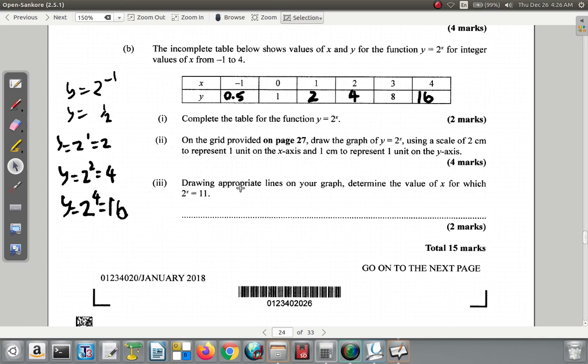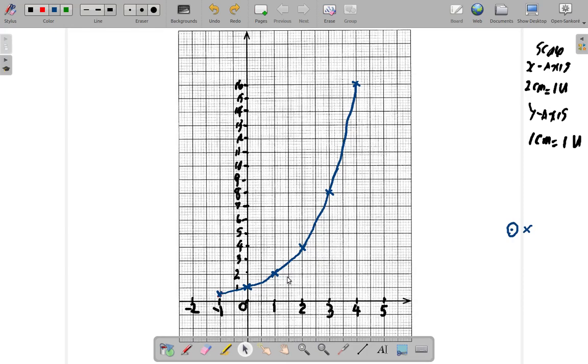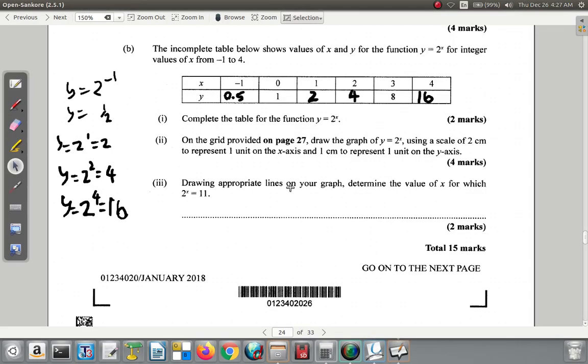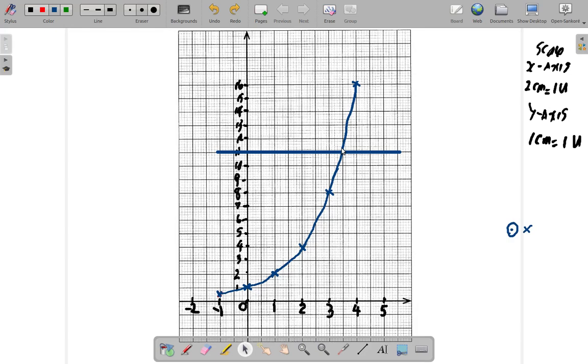Then, drawing appropriate lines on your graph, determine the value of x for which 2 to the power of x is 11. The value of x for which 2 to the power of x is 11. Now what that means, you're going to identify where y is 11. And if you draw a horizontal line, the value for y is equal to 11, wherever it crosses the line, the curve, you go down to find the value of x. It looks like about 3 and a half. Where the intersection is, you draw down.